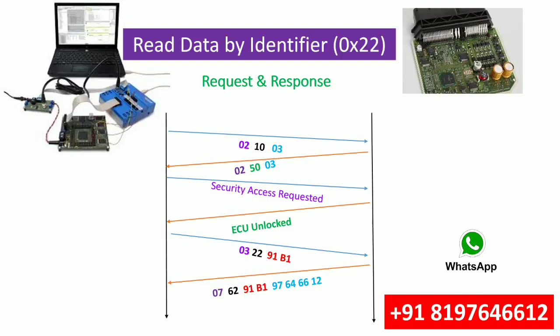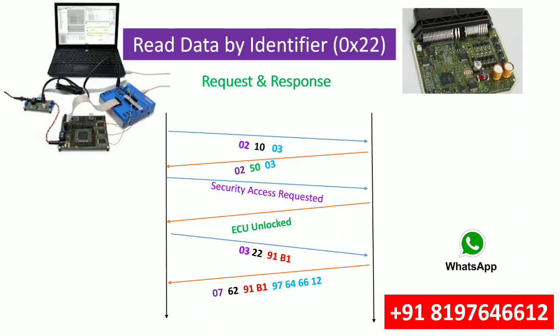The DID is a two-byte identifier: 0x91 is the first byte and 0xB1 is the second byte. The data present in DID 0x91B1 is 97646612 — so we have now successfully read the ECU serial number. This is the practical real-time working flow.